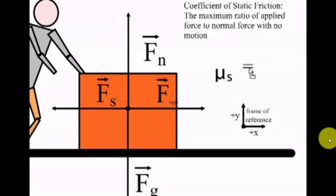There's a coefficient of mu sub s, and that is equal to the ratio of the applied force to the normal force. And you'll notice that we're only interested in the magnitude of those quantities, not the fact that they're vector quantities.